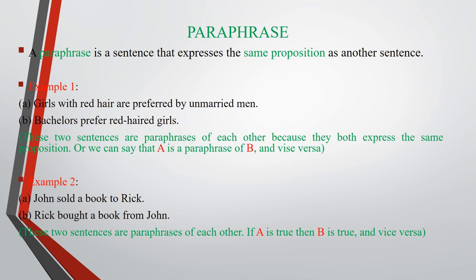The second sense relation of similarity is paraphrase. A paraphrase is a sentence that expresses the same proposition as another sentence — i.e., two sentences with the same proposition. For example, 'Girls with red hair are preferred by unmarried men' and 'Bachelors prefer red-haired girls' are paraphrases of each other because they both express the same proposition. Similarly, 'John sold the book to Rick' and 'Rick bought a book from John' are also paraphrases. Notice that if A is true, then B must be true, and vice versa.